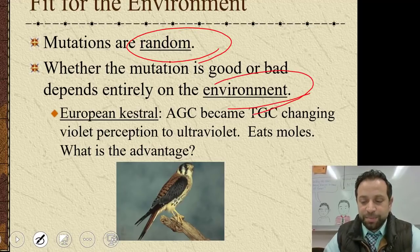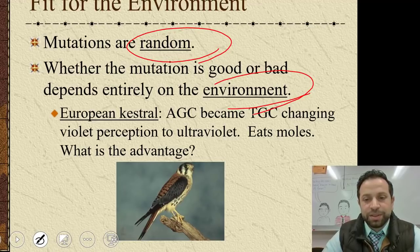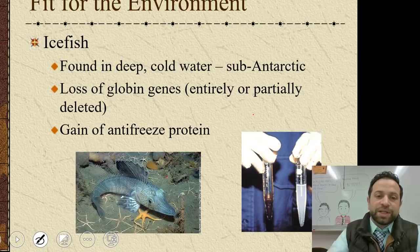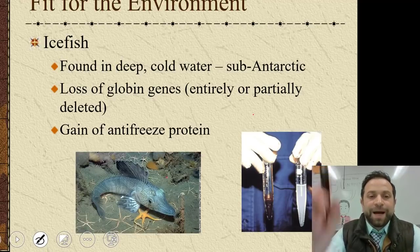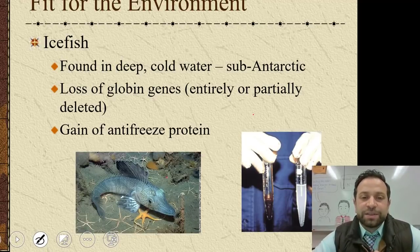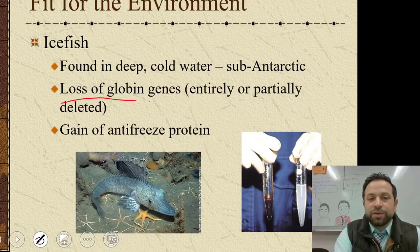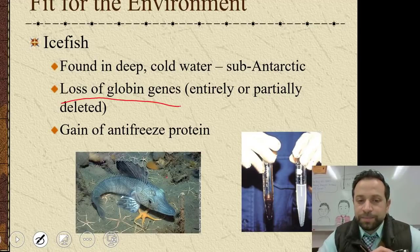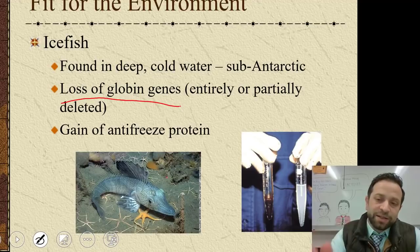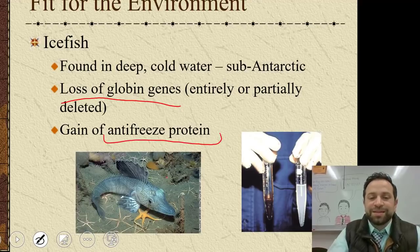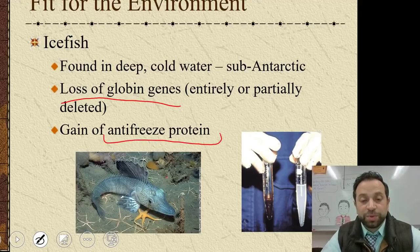Here's an example: ice fish are found in deep cold waters and have a loss of a globin gene, which means it's entirely or partially deleted. This helps them gain an antifreeze protein, which means they actually can't freeze in super cold and frozen waters.